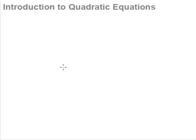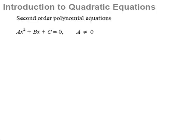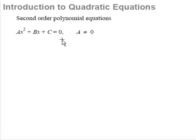This is a short introduction to what quadratic equations are all about. Quadratic equations are basically second-order polynomial equations, or polynomials with degree 2. They always come in a form like this: ax² plus bx plus c equals 0. This is a quadratic equation when a is not 0.